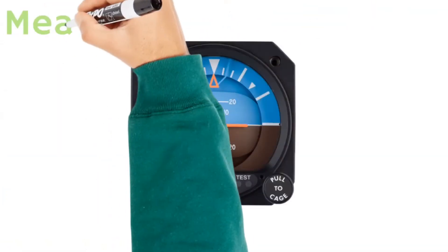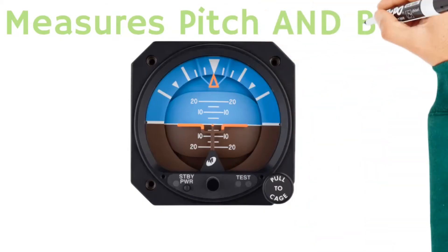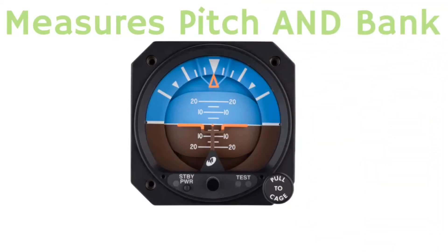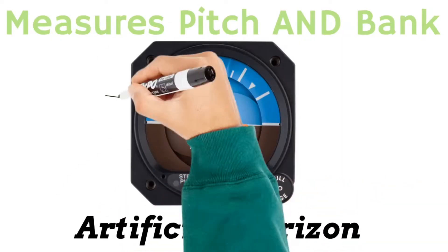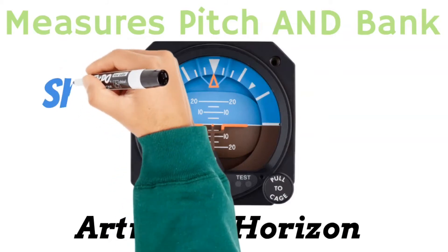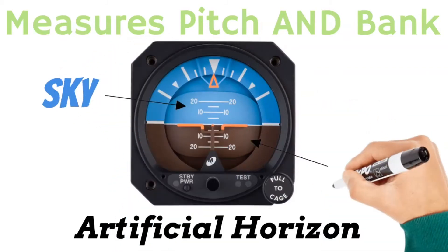The purpose of the Attitude Indicator is to measure the aircraft's pitch and bank in relation to the horizon without looking outside. Because of this, some pilots refer to this instrument as the artificial horizon. And as you can see, it's specially color-coded for pilots so you can tell the difference between sky and dirt.